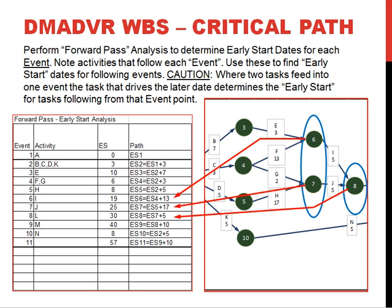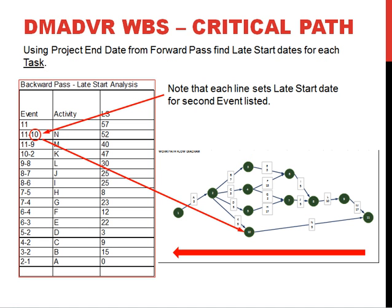Events 7 and 8 have similar situations, leading to early start dates of 25 and 30, respectively. Once we have that done, we go to the backwards pass table, putting in event 11 with its 57 days — the total length of the project — and look at the last task completed, which is N, working backwards through the project workflow diagram. N has a duration of 5 days, so we track 5 from 57, giving a late start for event 10 of 52 days. We use the same logic to calculate back through all other events.